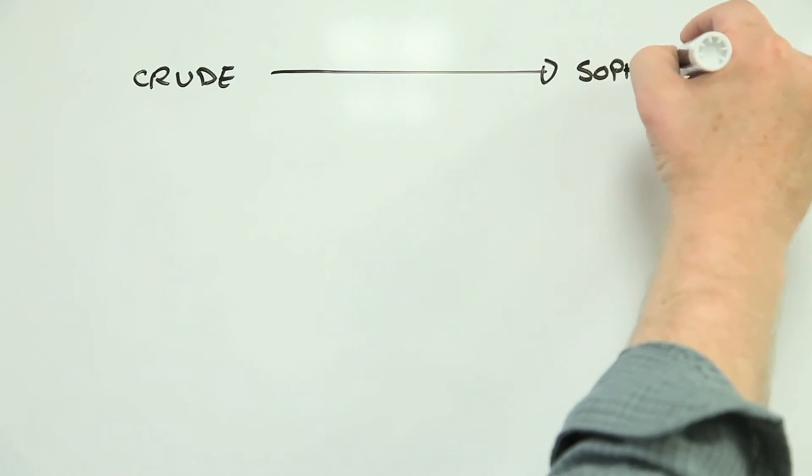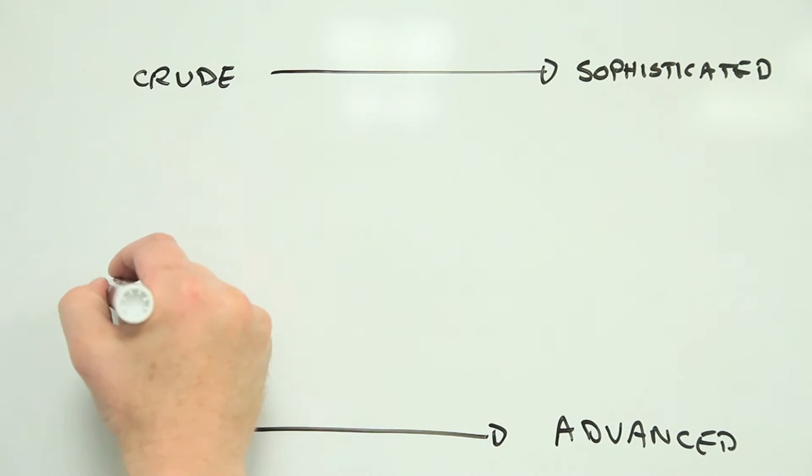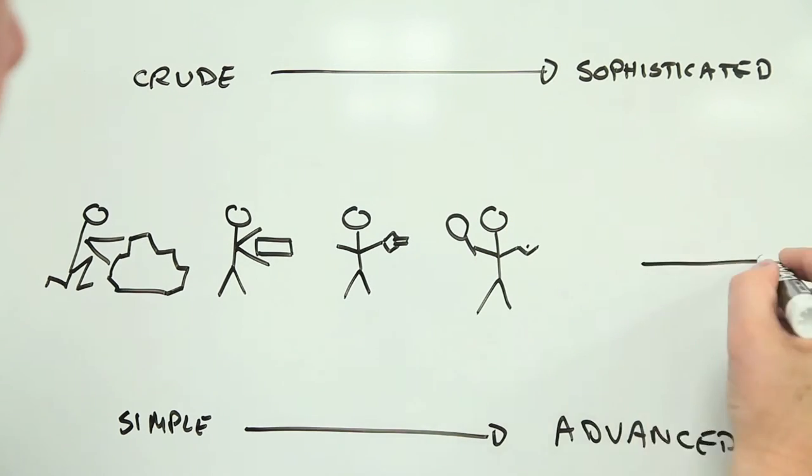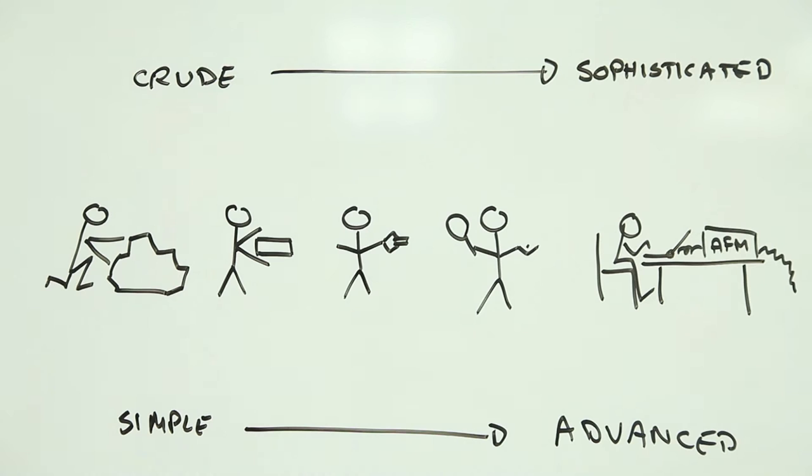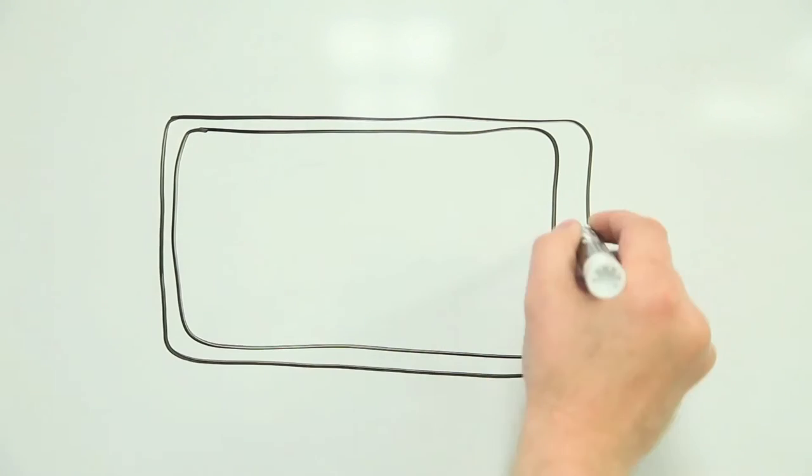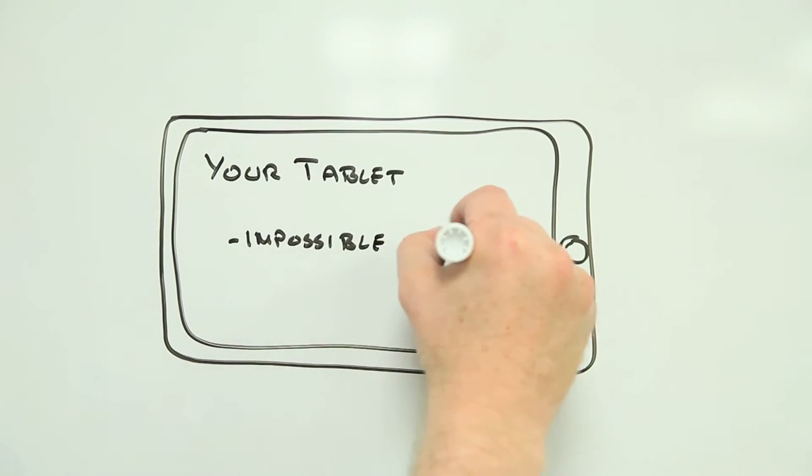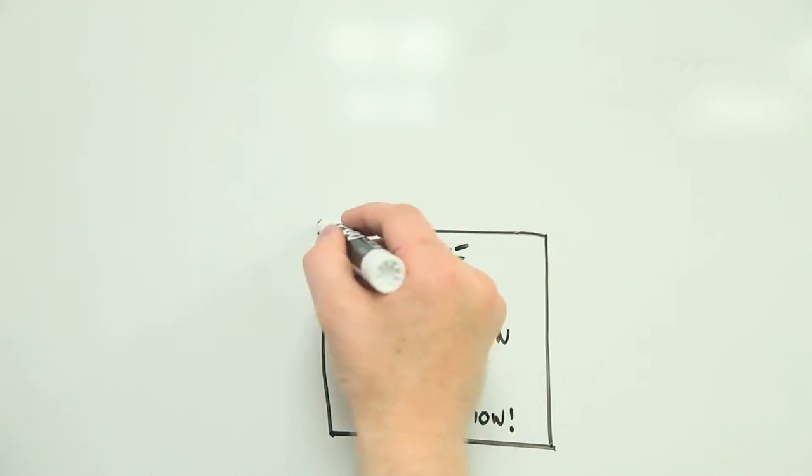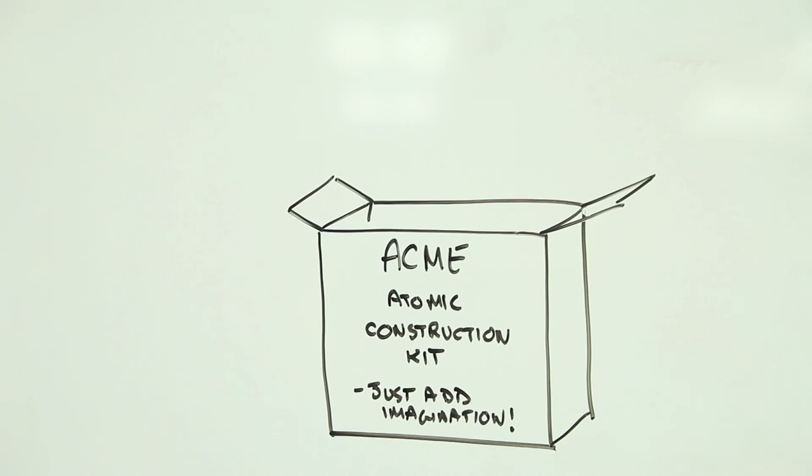Over the past 100 years, we have discovered how the arrangement of atoms and materials influences how those materials behave. And we've started to use this understanding to design and create new materials that have never before existed. This heady combination of new knowledge and new tools and techniques for manipulating matter is enabling scientists and engineers to create products that were unimaginable just a few years ago. We've effectively opened nature's toolbox and we're starting to play rather seriously with what we've found.